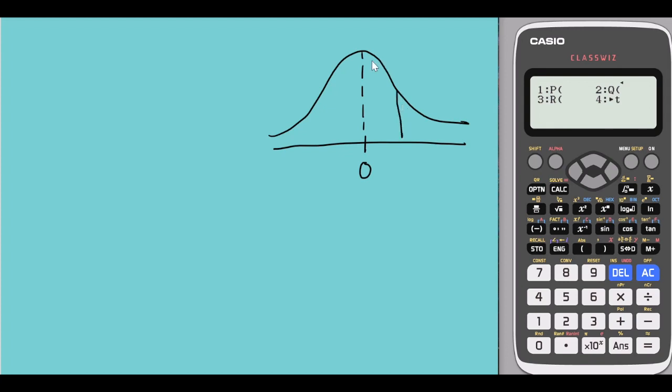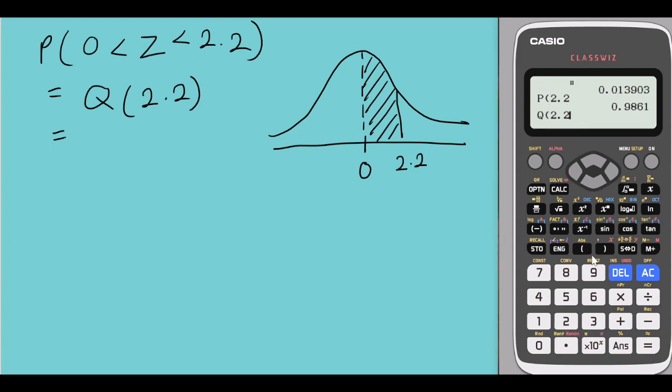For example, I want to find the probability of Z between 0 and 2.2. The probability of Z between 0 and 2.2 could be easily found using Q. So Q of 2.2 would give us 0.4861. And similarly...